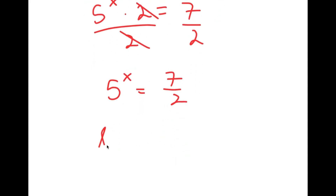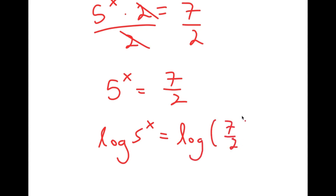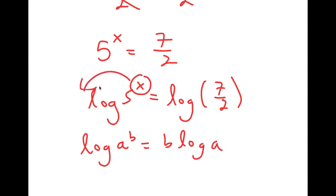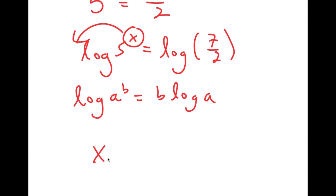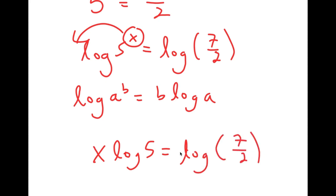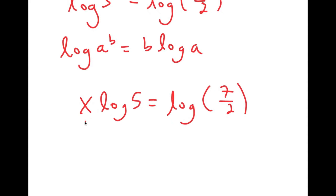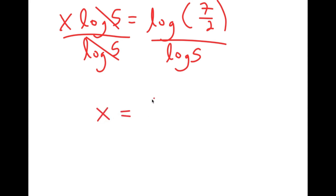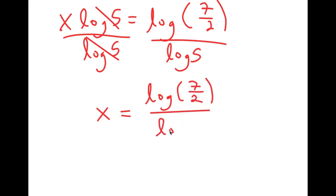Now I'm going to take the log on both sides. So I get log of 5 to the power of x equals log of 7 over 2. Using the property that log a to the power of b equals b times log a, I can move x to the front. So I get x times log 5 equals log of 7 over 2. To isolate x, I divide both sides by log 5, giving x equals log of 7 over 2, divided by log 5.